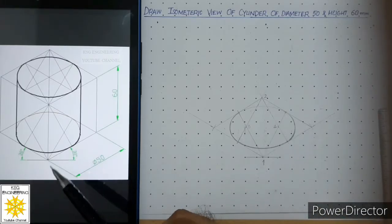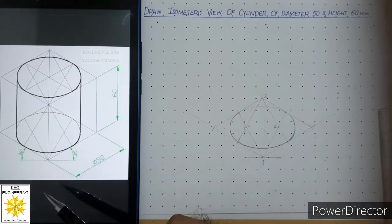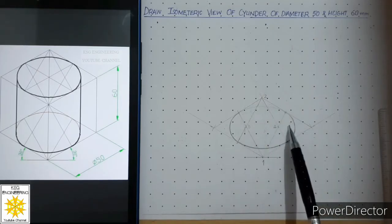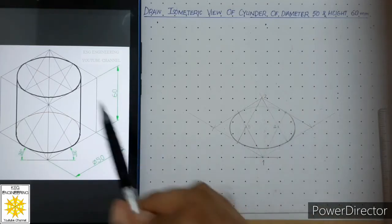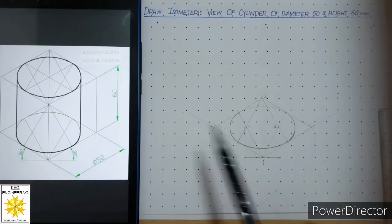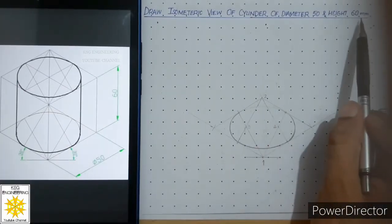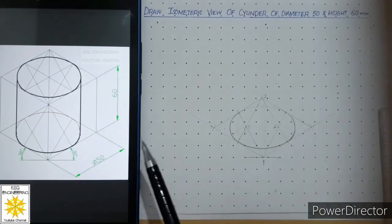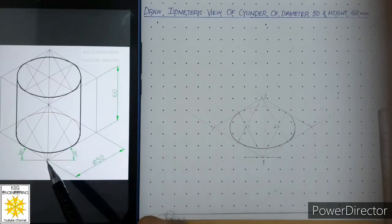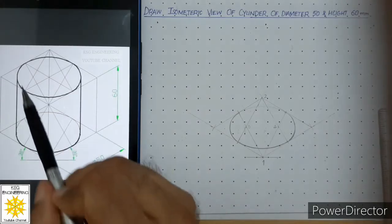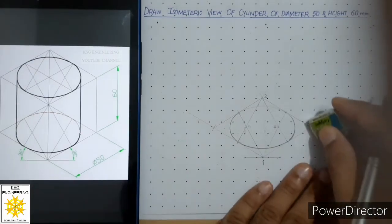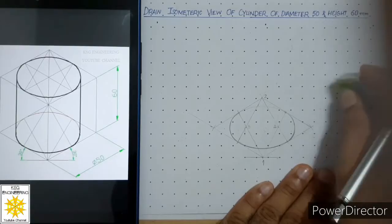After drawing the base of the cylinder we need to draw the top as well, which will be at a height of 60mm. For that we draw an isometric box. Let us draw the isometric of the box now — first erase these extra construction lines.